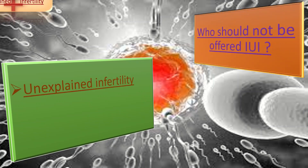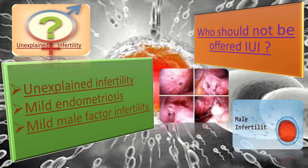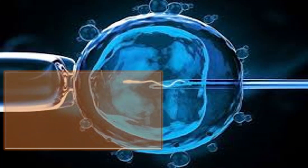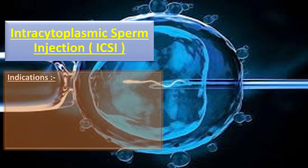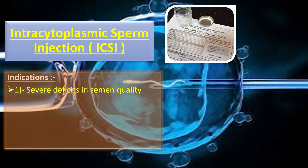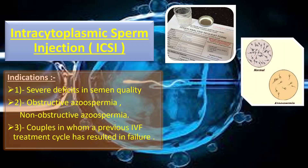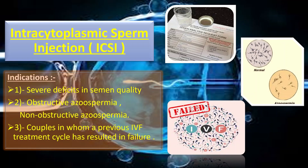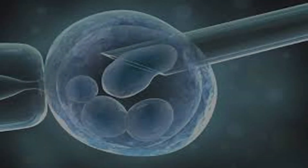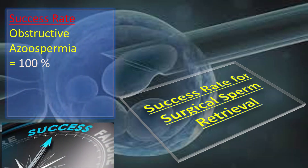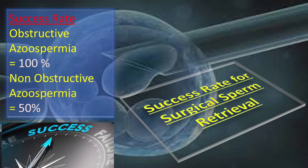IUI should not be offered to those with unexplained infertility, mild endometriosis, or mild male factor infertility. Intracytoplasmic sperm injection — ICSI — has a live birth rate of about 25 to 30%. Indications include severe deficit in sperm quality, obstructive azoospermia, non-obstructive azoospermia, and couples with a previous failed IVF cycle. For surgical sperm retrieval, the success rate is 100% in obstructive azoospermia and 50% in non-obstructive cases.